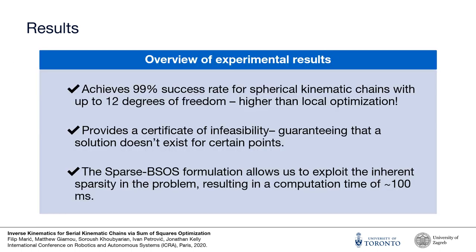Summarizing our results, our method achieved a 99% success rate for joint limited spherical kinematic chains with up to 12 degrees of freedom. Moreover, the certificate produced by the solution method can prove that a given end-effector pose is unreachable given the link lengths and joint limits. Finally, the sparsity exploiting property of the sparse bounded sum of squares solver results in computation times in the order of 100 milliseconds.